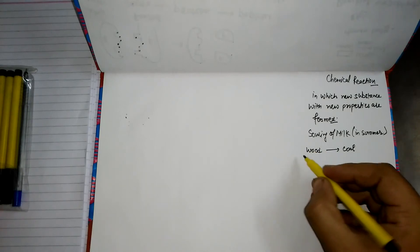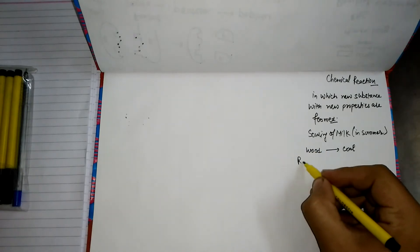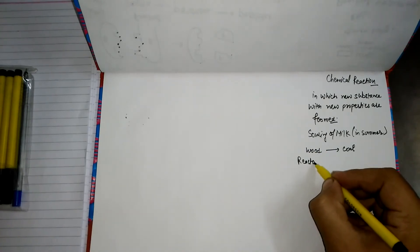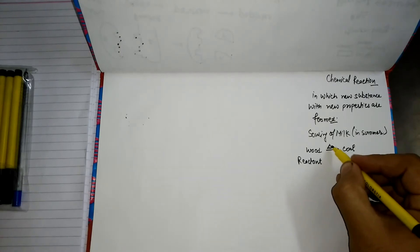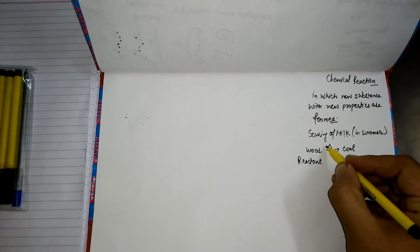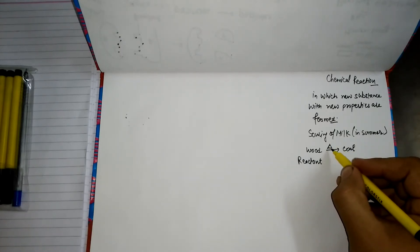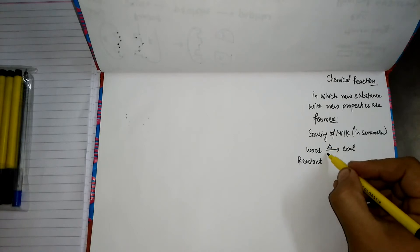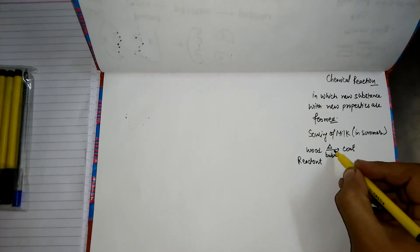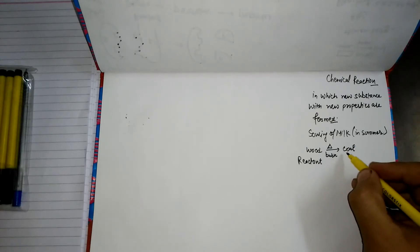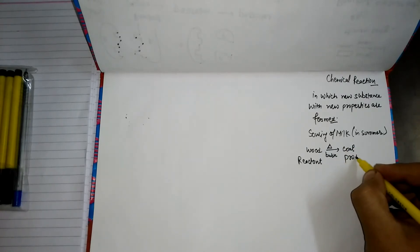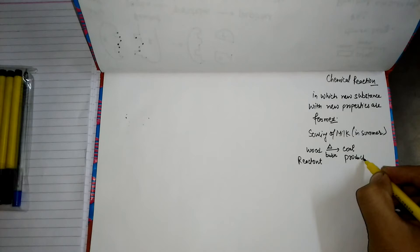This piece of wood is called the reactant. Heat is applied — delta is the symbol for heat or burning. After burning, the wood becomes coal, which is the output, and we call it the product.